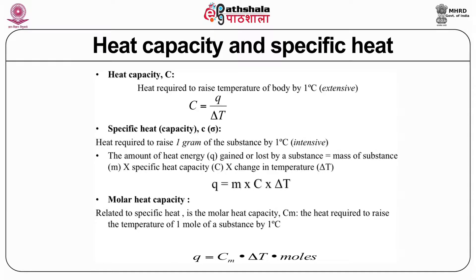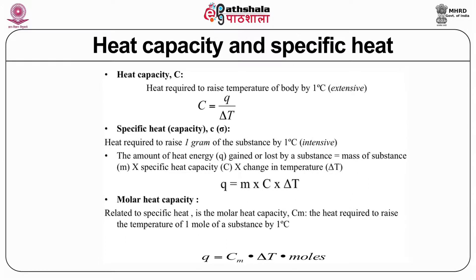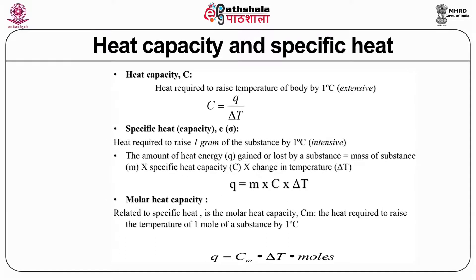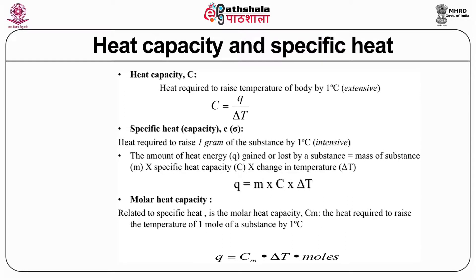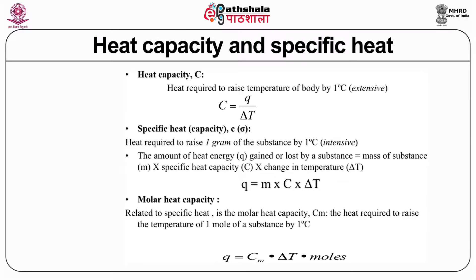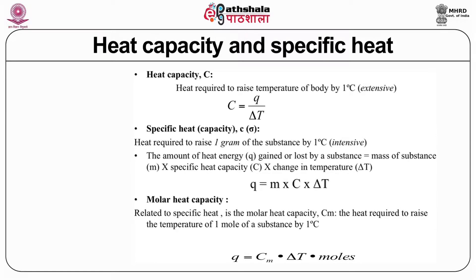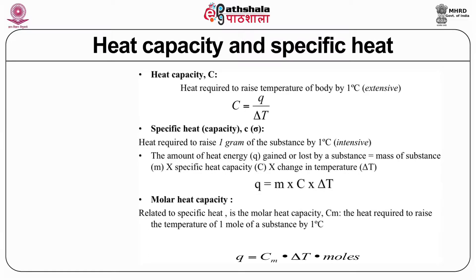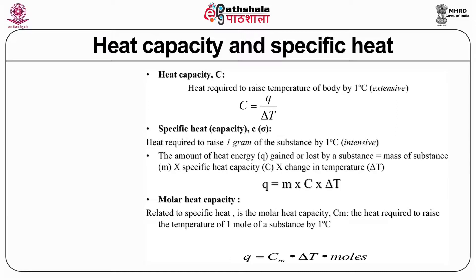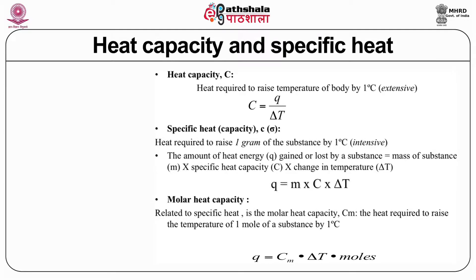There is one more term called molar heat capacity. Specific heat capacity applies to 1 gram, but when comparing two substances it is better to express in molar terms. Molar heat capacity is the heat required to raise the temperature of 1 mole of substance by 1 degree centigrade. Using specific heat, Q equals C times moles concentration times delta T.